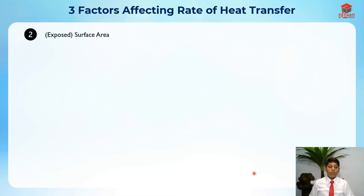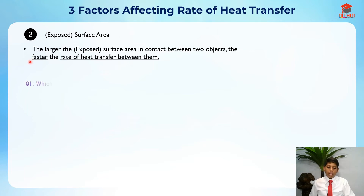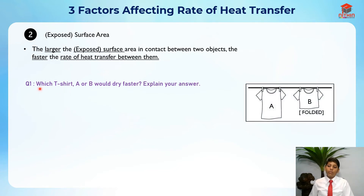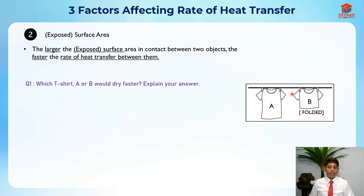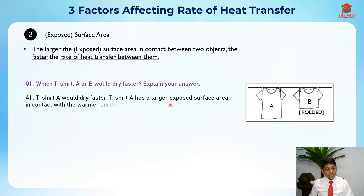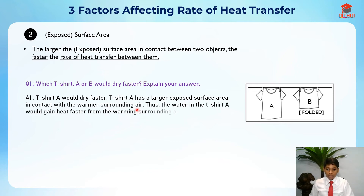For exposed surface area, consider this question: which t-shirt, A or B, would dry faster? T-shirt B is folded and A is not. Since A is not folded, it has a larger exposed surface area. T-shirt A has a larger exposed surface area in contact with the warmer surrounding air, so the water in T-shirt A will gain heat faster and evaporate faster, allowing T-shirt A to dry faster.